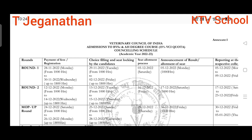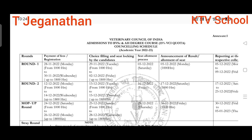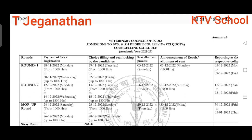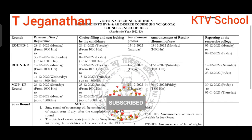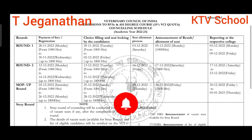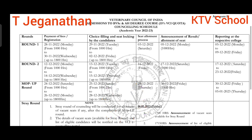The first round registration is going to happen from 28 to 30 November — nearly four days. Choice filling and seat locking by candidates runs from 29 November to 2 December. The seat allotment process and announcement of results will be on 5 December morning at 10 o'clock. Reporting to the college is from 5 to 9 December.